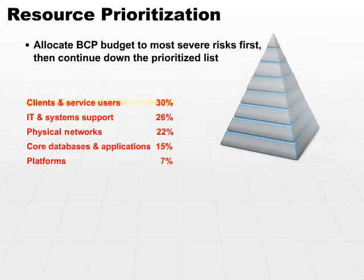Then we go and cover the second most important business function, and we keep going until one of two things happens. We can either finish out our list so that every business function is covered, or we can use the reality method and keep going until we run out of money.